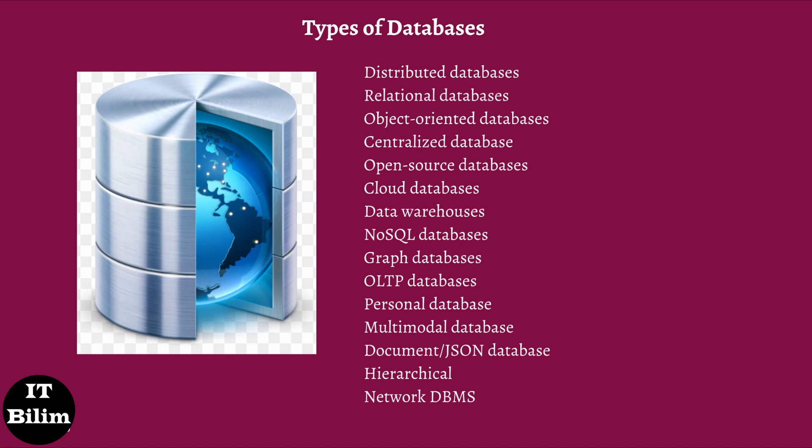OLTP databases: An OLTP database type is able to perform fast query processing and maintain data integrity in multi-access environments. Personal database: A personal database is used to store data on personal computers that are smaller and easily manageable. The data is mostly used by the same department of the company and is accessed by a small group of people. Multimodal database: The multimodal database is a type of data processing platform that supports multiple data models that define how certain knowledge and information in a database should be organized and arranged.